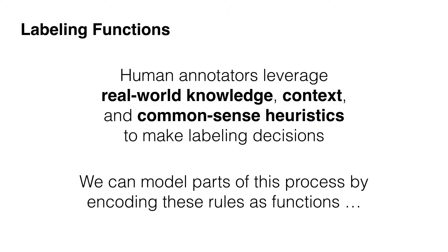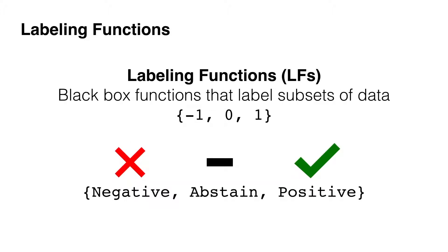This gets to the heart of what a labeling function does: human annotators leverage all kinds of real-world knowledge, information about context, and common sense heuristics to make their decisions. This isn't a random process — there are parts we can model and encode using rules as functions. Formally, a labeling function is a black box function that labels subsets of data. In this case, our label space is negative 1, 0, 1, which maps to negative, abstain (meaning decline to vote), or positive.